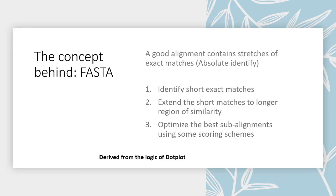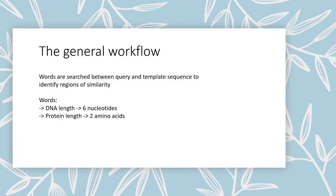This whole concept is derived from the logic of dotplot. The general workflow of FASTA is that words are searched between the query and template sequence to identify regions of similarity — just like in a matrix where one sequence is placed vertically and the other horizontally. 'Word' has a specific meaning: it is the length of the sequence being aligned between the two. For DNA, a word length of six nucleotides is standard; for proteins, a word length of two amino acids is typically used when comparing sequences.